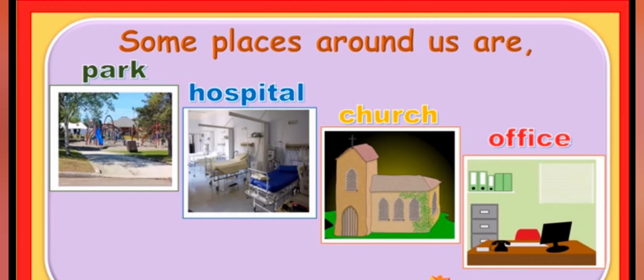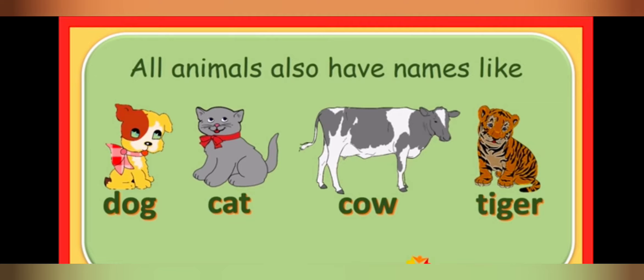Now students, as we have names, even animals also have names. So, let us check out what are they called. In the first picture, we can see a dog. Second picture, cat. Third picture, cow. And fourth picture is of a tiger.